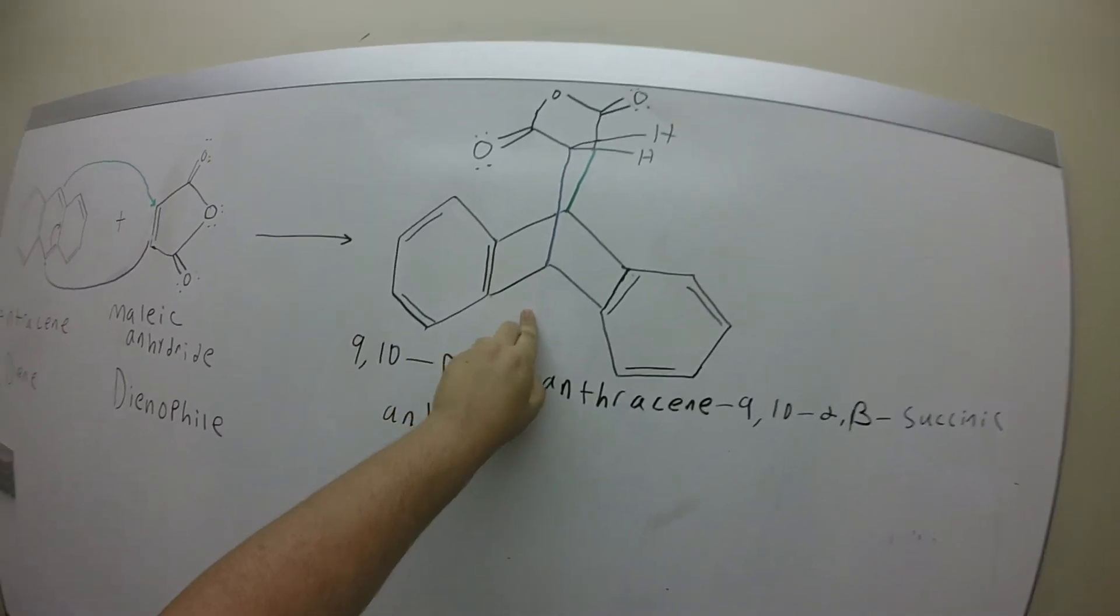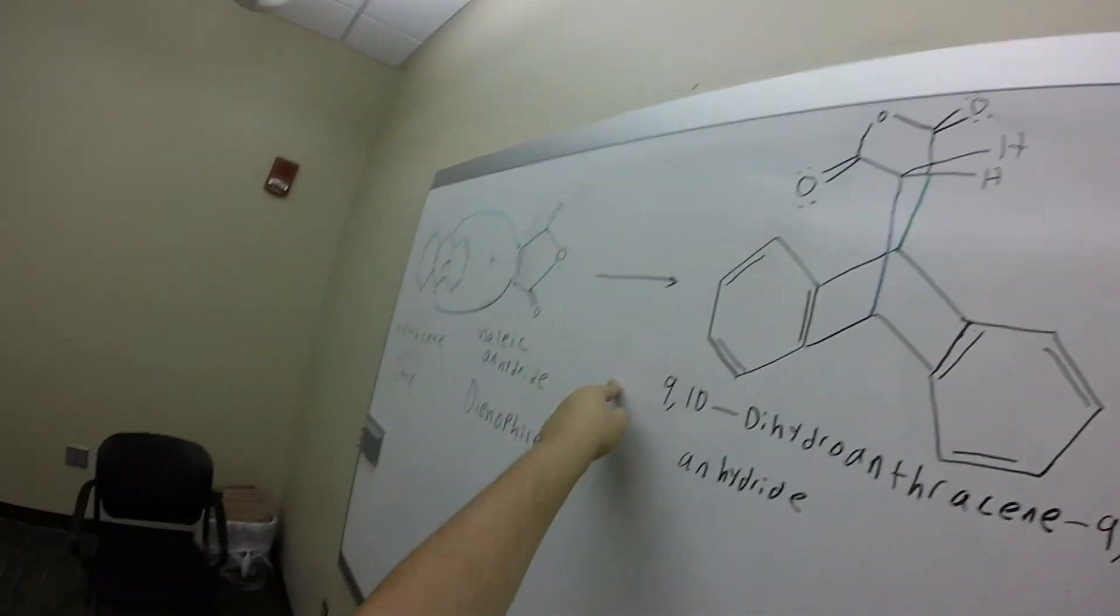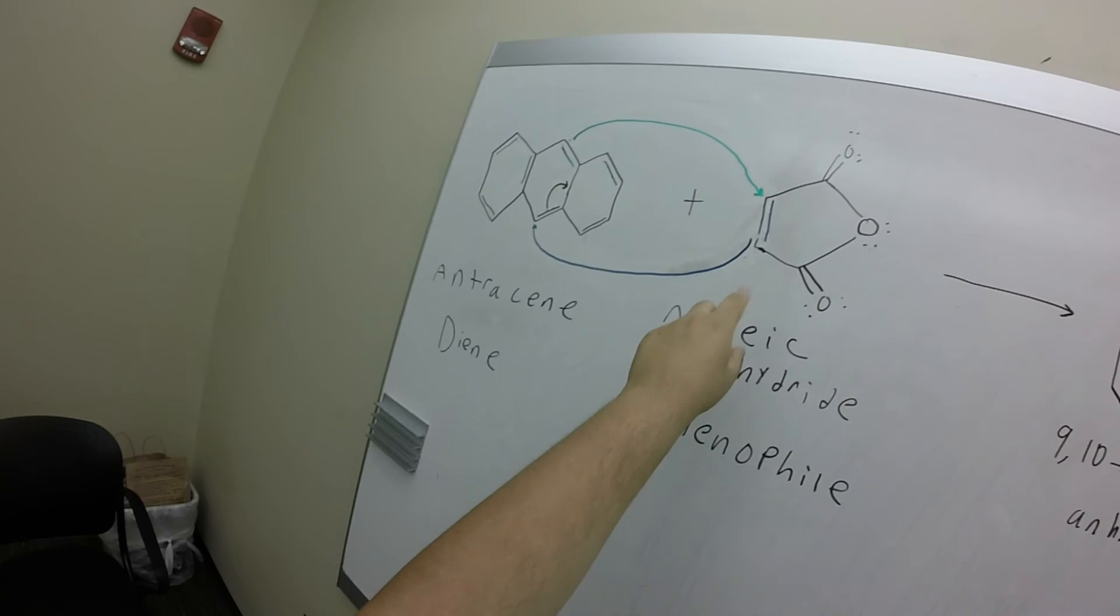And as you can see, the two single bonds that were formed from these double bonds are indicated.